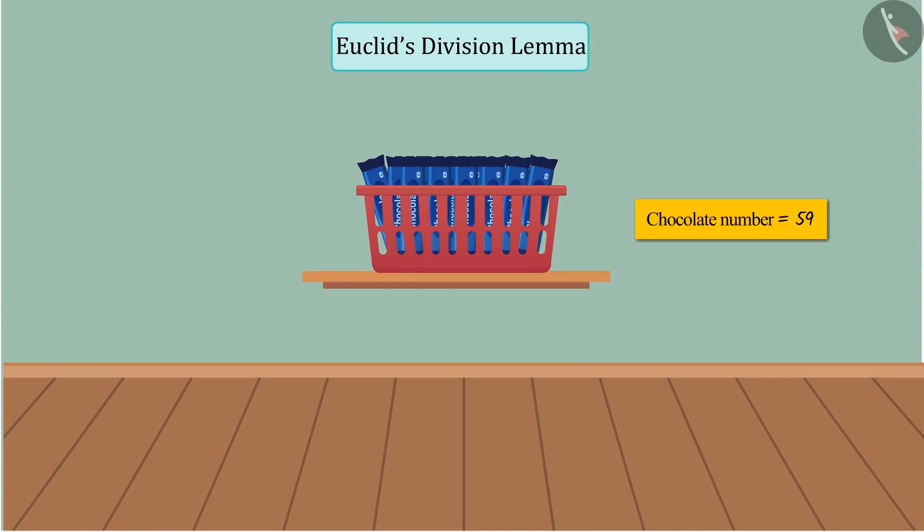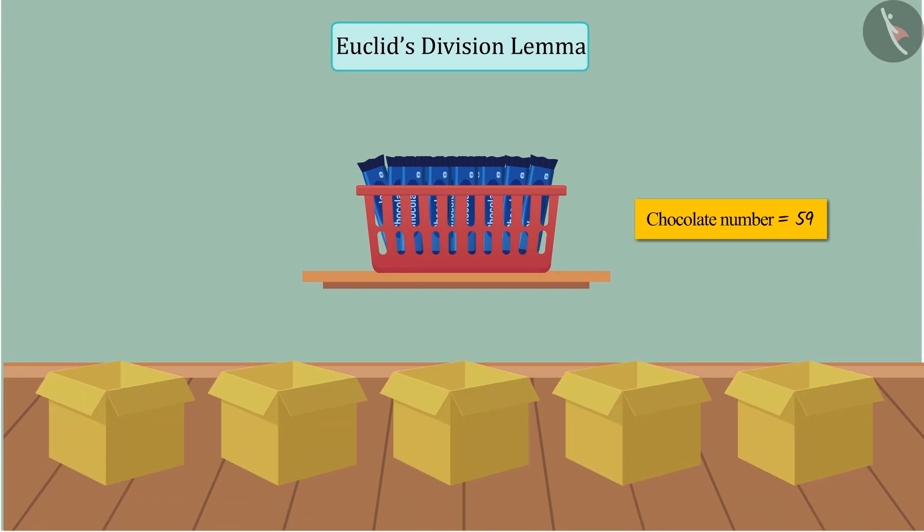Now, if you want to keep the same chocolates in 5 boxes instead of 3 such that there are equal number of chocolates in each box, then what will you do?